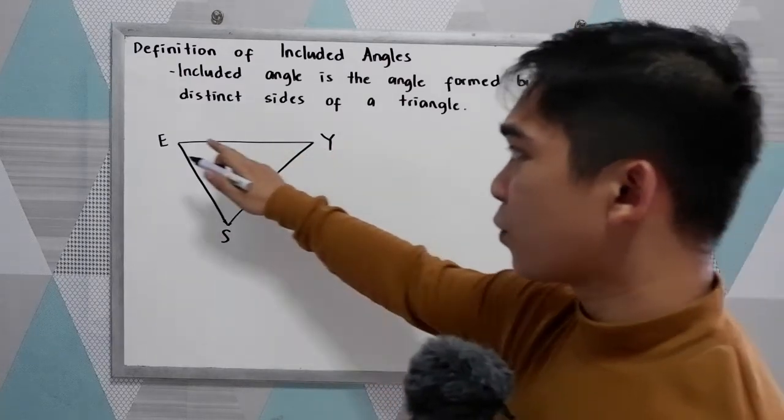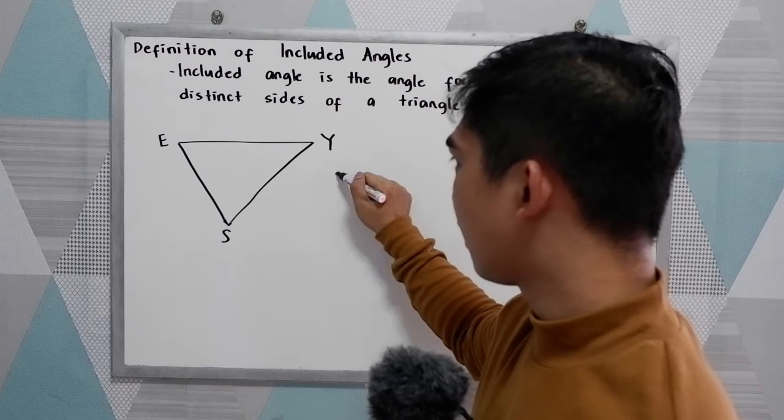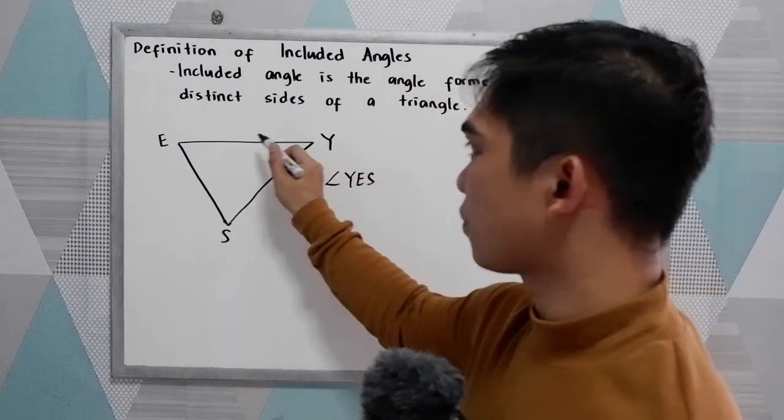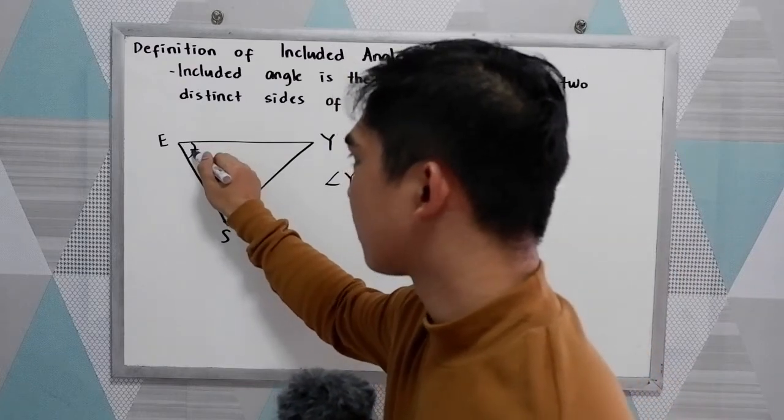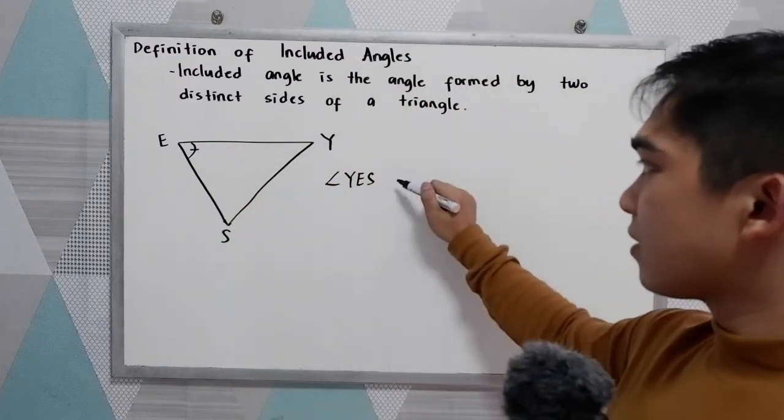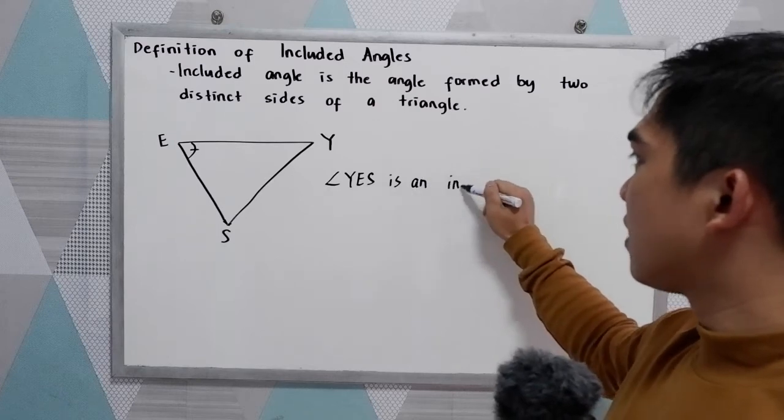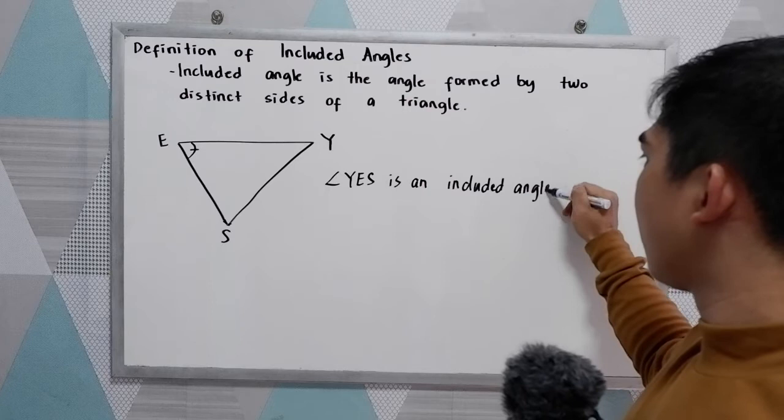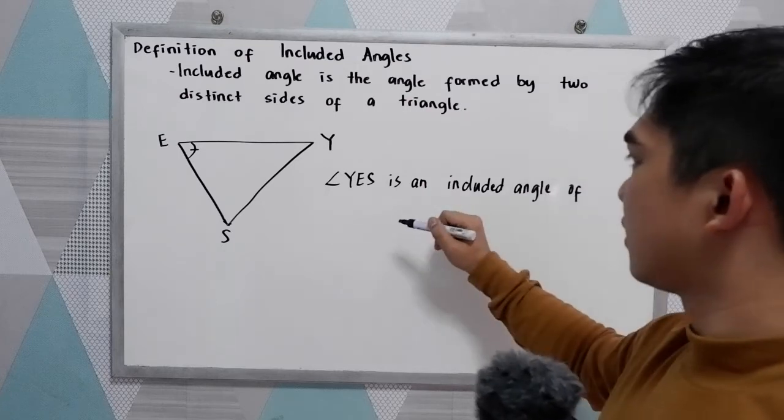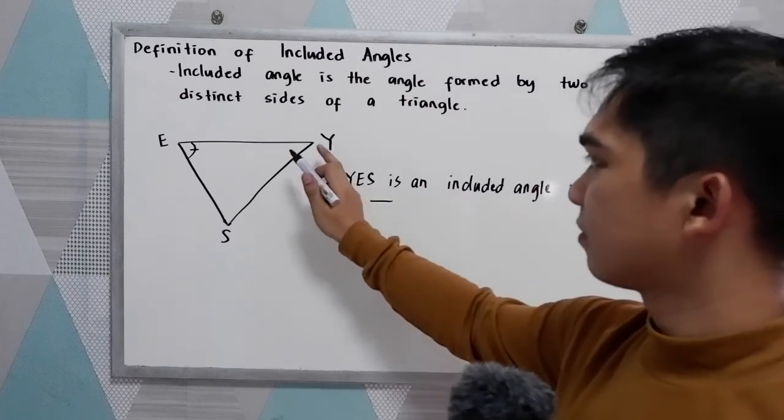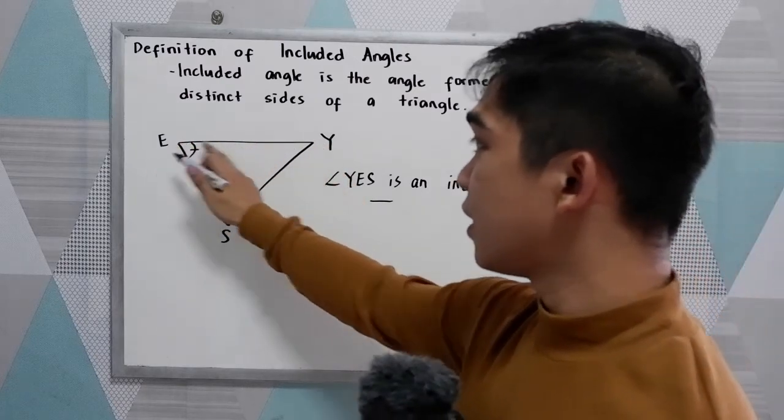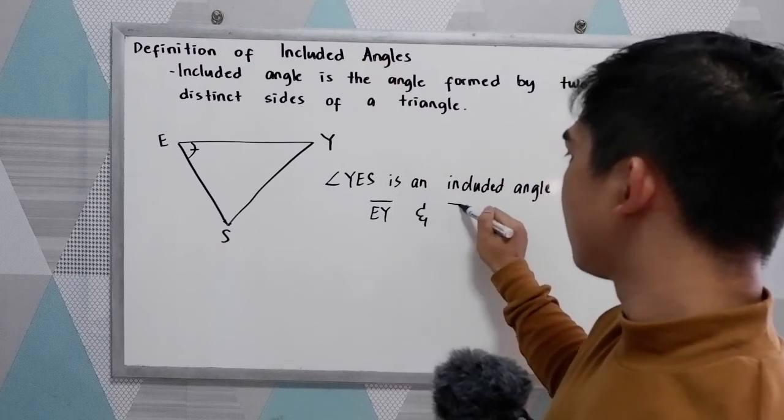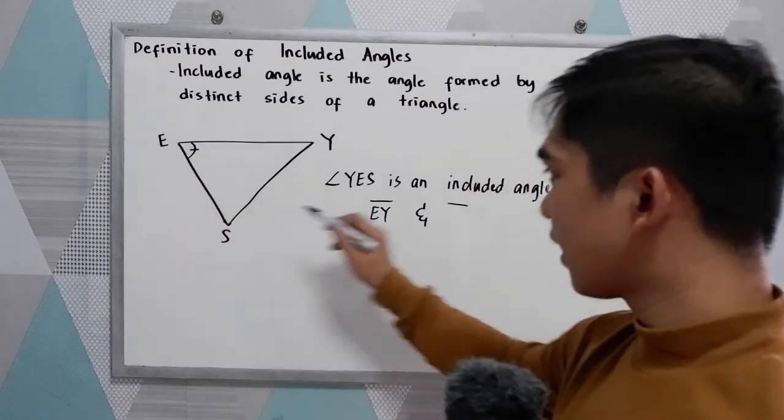Let's start with angle YES. Angle YES is an included angle of side EY and side ES.